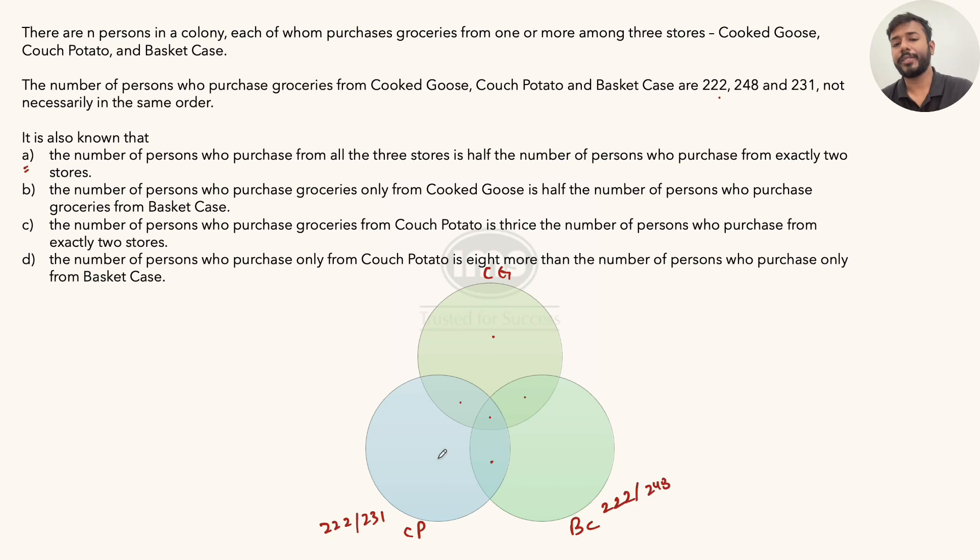Now CP has to be a number whose one by three is a whole number. I can check for the values. 222 sum of digit is 6, divisible by three. 248 sum of digit is 14, not divisible by three. So this cannot be the value for CP. 231 sum of digit is 6, divisible by three. So CP's possibilities: either it is 222 or it is 231.